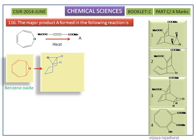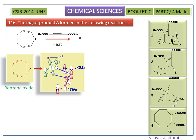Here we can see the HOMO of the diene — it should have 1 node. This is the dienophile. Now we can see the LUMO of the dienophile — it should have 3 nodes. The front lobe of the diene interacts with the dienophile, leading to a sigma bond. This is called the primary interaction.